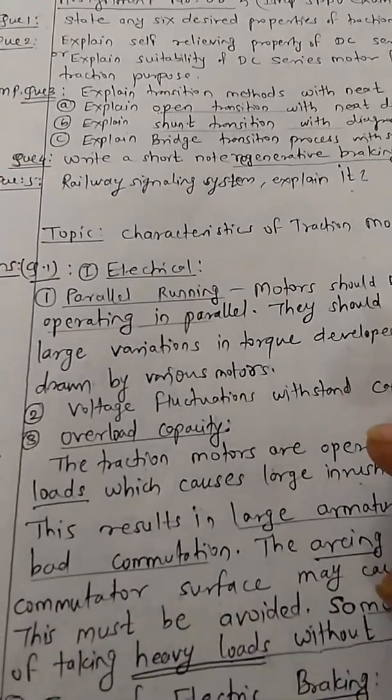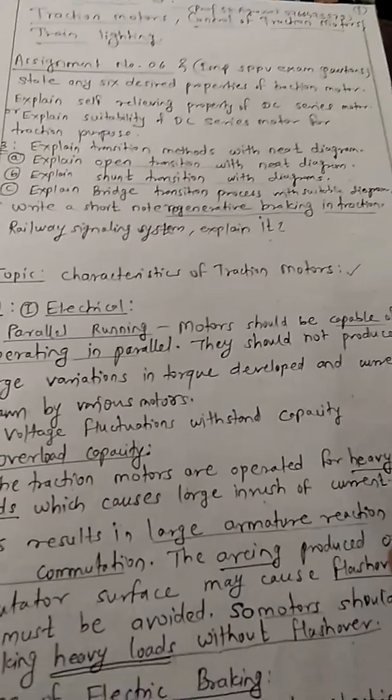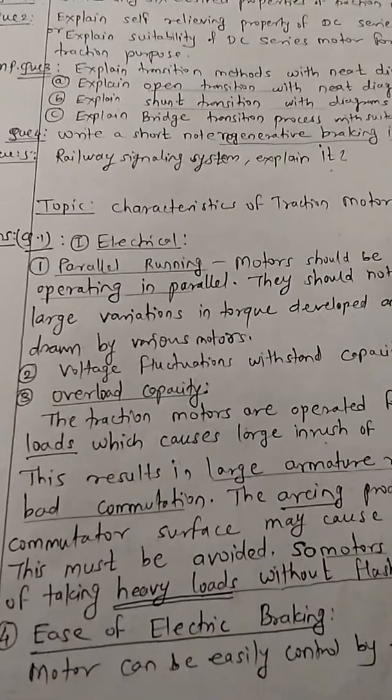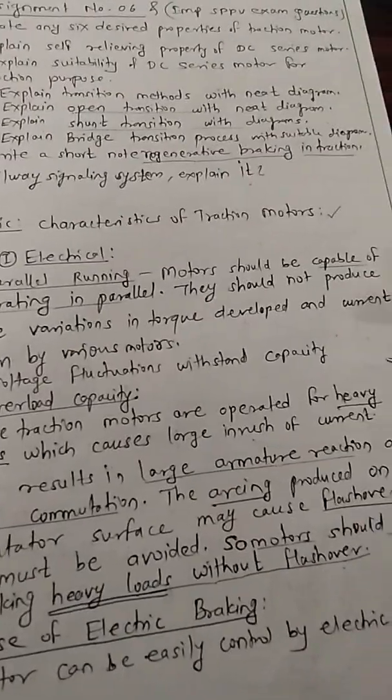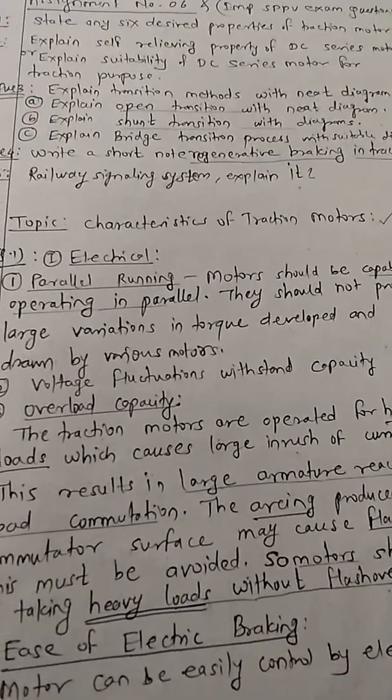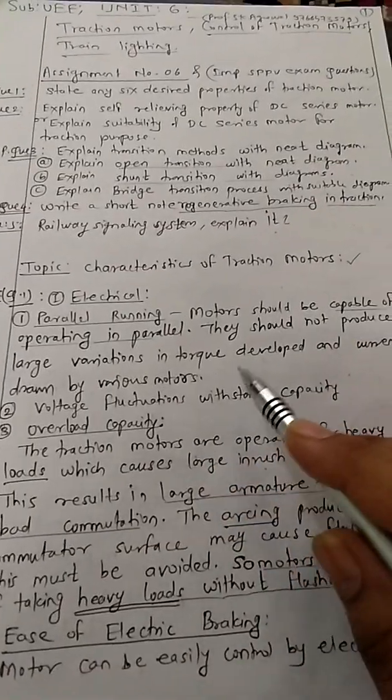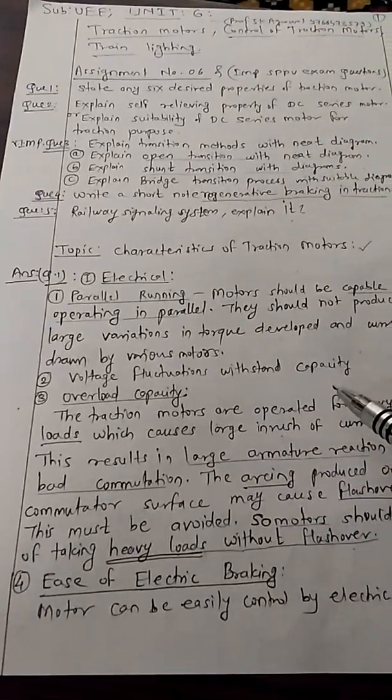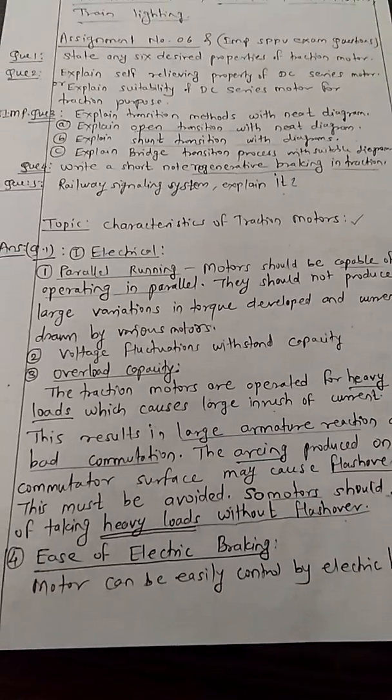Let's discuss some characteristics for traction motors, electrical ones first. Motor should be capable of operating in parallel. They should not produce large variation in torque developed and current drawn by various motors. Overload capacity of the motor should be high.